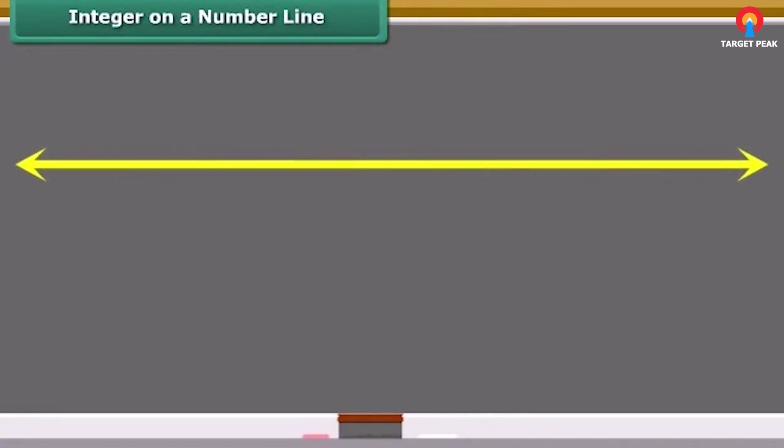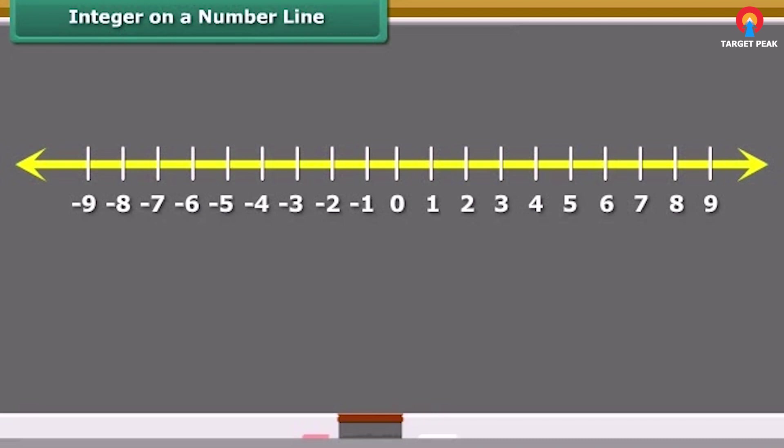This figure represents a line marked with some points at equal distance. A point on it is marked as zero.